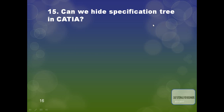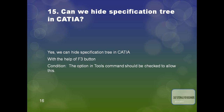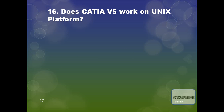The next question is: can we hide the specification tree in CATIA? Yes, definitely we can hide the specification tree in CATIA with the help of the F3 button, but the condition is that the option in the Tools command should be checked to allow this. The next question is: does CATIA V5 work on a Unix platform? Yes, definitely it works on a Unix platform as well.